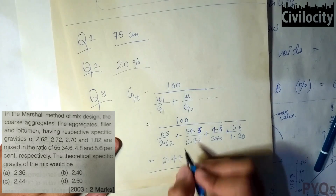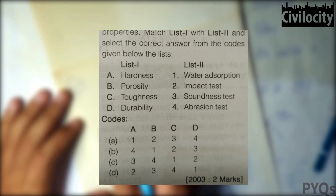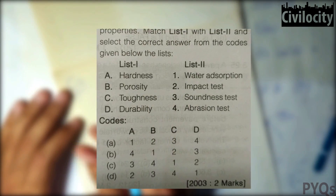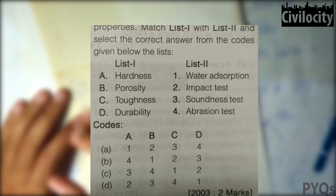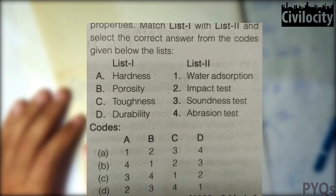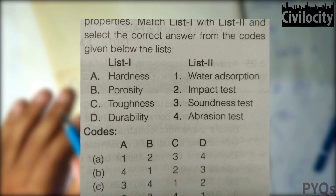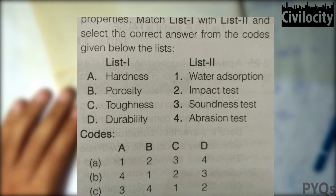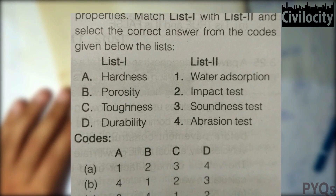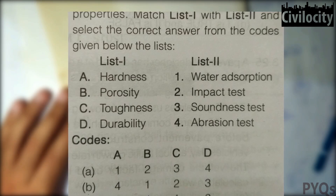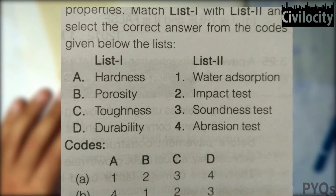Our fourth question asks to match properties with tests. Hardness is directly related to the abrasion test. Porosity is related to water absorption. Toughness is related to the impact test. Durability is directly related to the soundness test, in which aggregates are immersed in Na2SO4 and MgSO4 solutions. So the second option is correct.